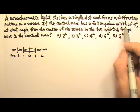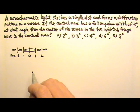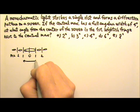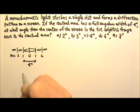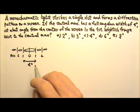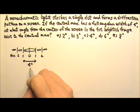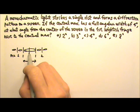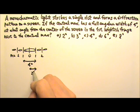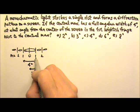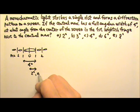And the central maximum has a full angular width of 4 degrees. That means that this angle here is 4 degrees. In equations, because all the angles are measured from the center of the screen, I'm just going to look at the angle to the center of the screen, that will be 2 degrees. And that's when M equals 1.